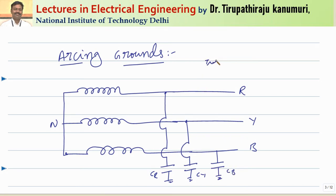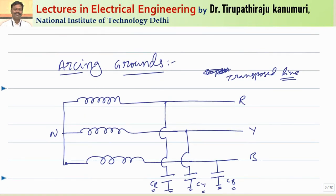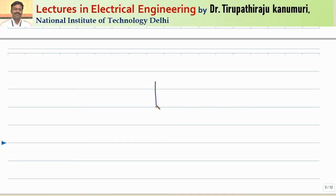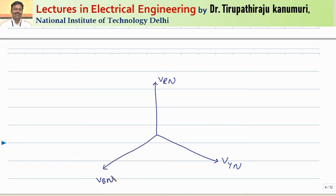Let us take the line as a transposed line. When the transposition is done properly — we have already seen in the capacitance calculations — the capacitance of all the phases will become equal. That means the value of CR will be equal to CY will be equal to CB. So let us try to draw the phasor diagram for the same. If we are taking the phase voltages, let us assume Vrn is the phase voltage of the R phase.